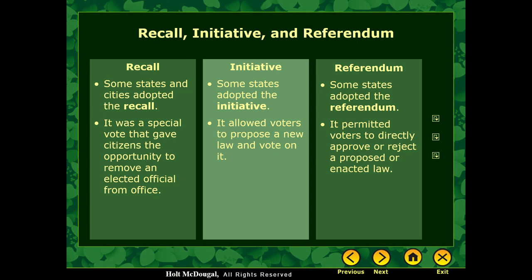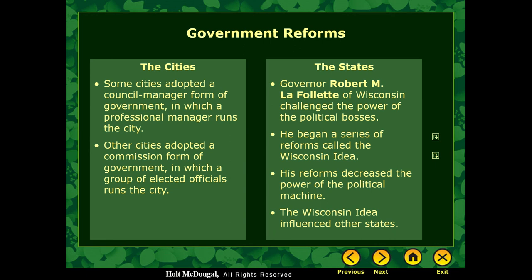The last one is the referendum. If the legislature has put a law in place and the people don't agree with it in large numbers, they can do a referendum — basically saying, 'We don't accept that law; get it off the books.' In big cities, city council managers form a government where a professional city manager runs it. Other cities adopt a commission form of government where a group of elected officials run the city instead of just one single mayor. In Wisconsin, Governor Robert M. LaFollette challenged the power of political bosses and started a series of reforms called the Wisconsin Idea, which decreased the power of political machines. Many other states then took the Wisconsin Idea and implemented it in their own states. That concludes Section 1.